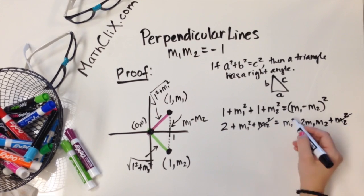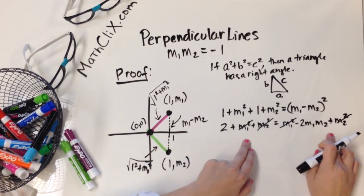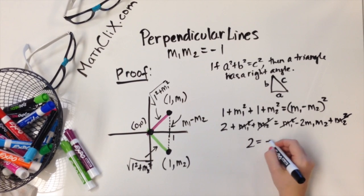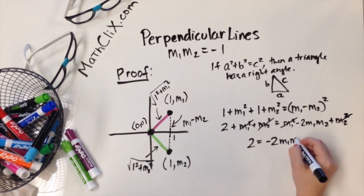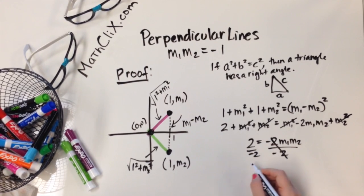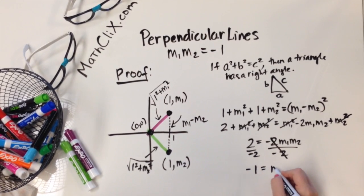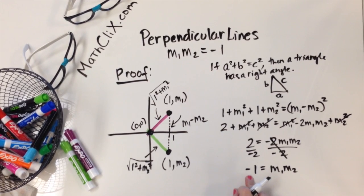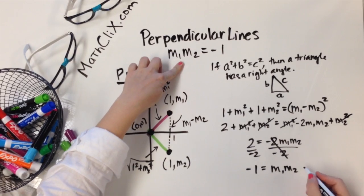These will cancel since they're present on both sides. So you have 2 = -2m1m2, dividing both sides by -2 now gives us that the product of m1 and m2 is equal to -1, which is exactly what we were trying to show.